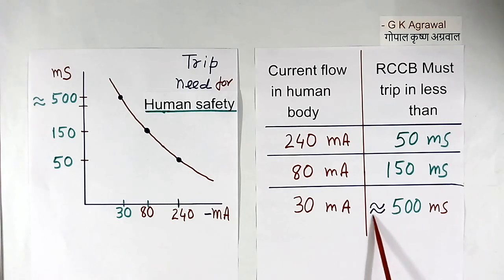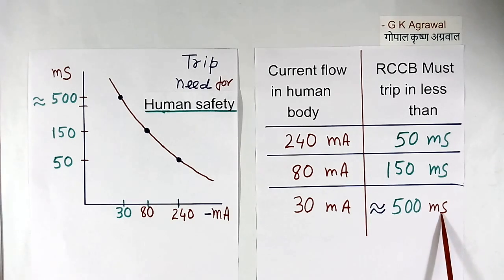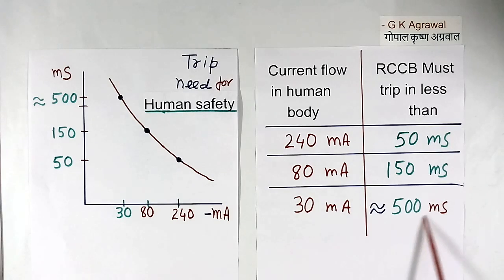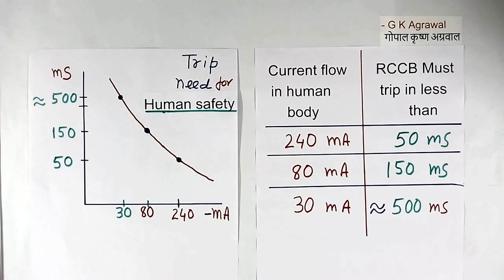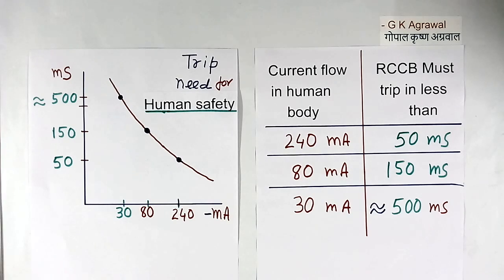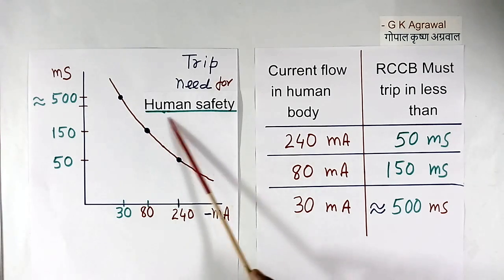This indicates approximately — I was not able to read exactly 500 ms in the plot I saw, so I have shown it approximately. To meet this time requirement, a 30 mA RCCB is used. A 100 mA or 300 mA type RCCB will not trip as per this chart. The 30 mA RCCB is made to meet this requirement for human safety. So we use a 30 mA type RCCB in the house for human safety.